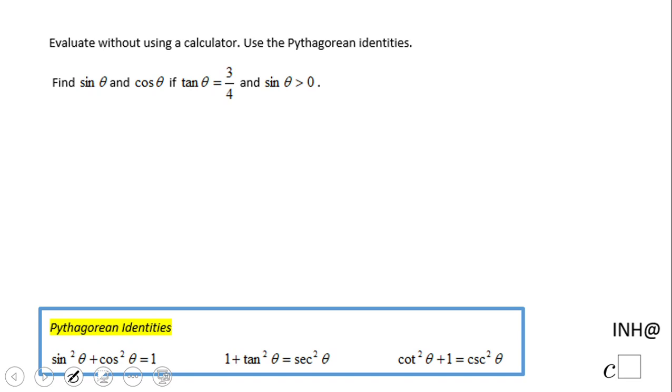Welcome back. In this example we need to find sine and cosine. The tangent is given as 3 over 4 and we know also the sine is a positive value.